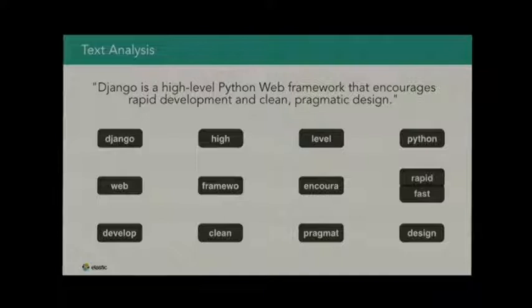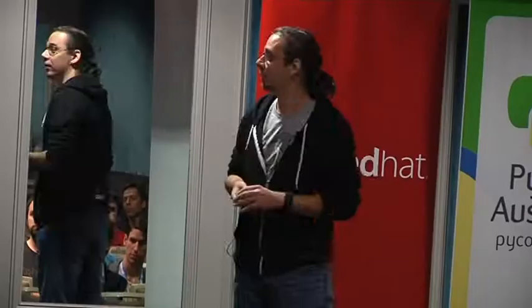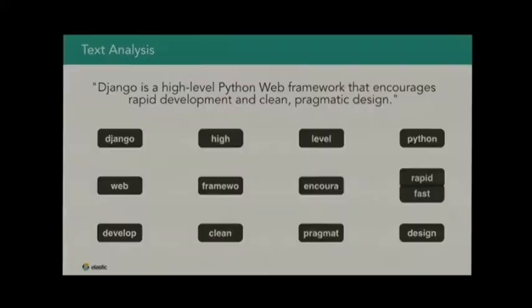In some cases, like 'rapid' and 'fast', those are synonyms — the same words. So if somebody is looking for a framework that allows them to develop fast, they should also find this document. It's not their fault that the creators of Django have a larger vocabulary and use 'rapid' instead of 'fast'. You should not be penalized for Adrian's journalistic education.